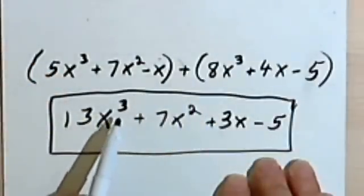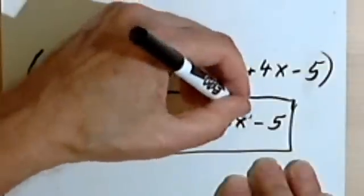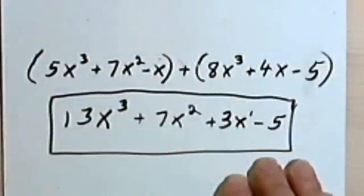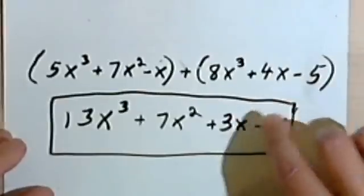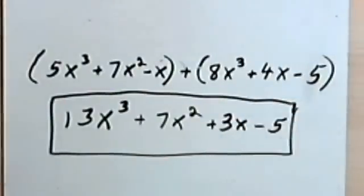Once again, notice that my exponents are in descending order: 3, 2... I can write a little 1 here if I wanted to, but it's not necessary. Okay? So let's go on to subtraction.